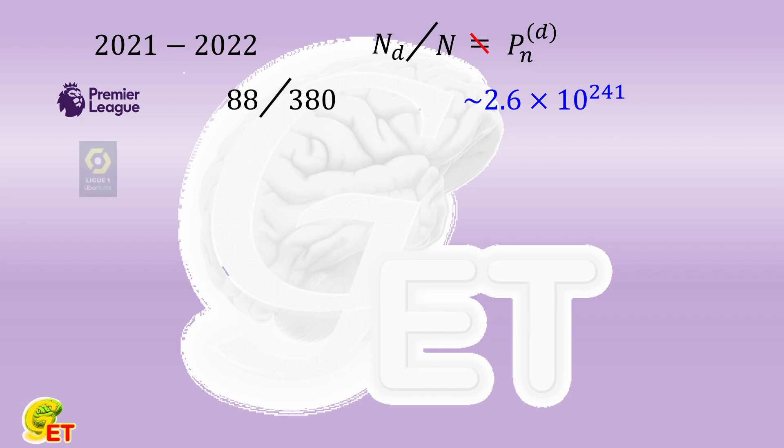The Ligue 1. Among the total 380 games, there are 102. It will take more than 10 to the power of 217 seasons.